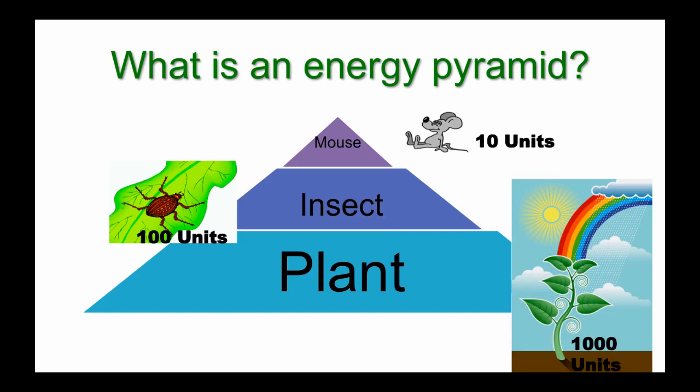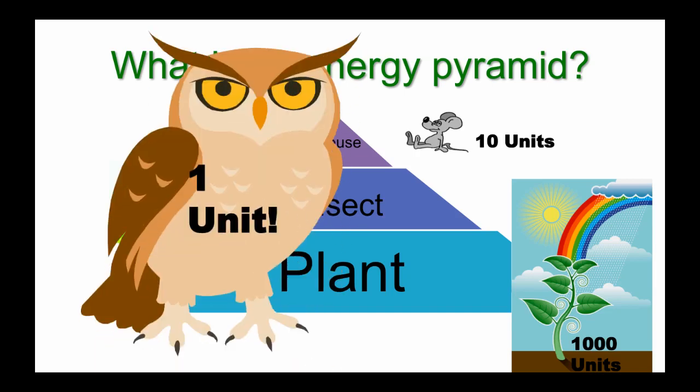Of those 100 units the insects produce, only about 10 units are available to the mice at the third level. And if an owl swoops in and eats the mouse, there's only about one unit left for the owl to use. That's why we usually have lower numbers of carnivores in an ecosystem than we do of plants or first-level consumers.